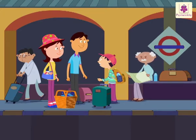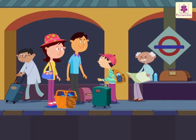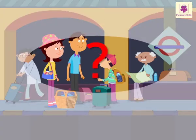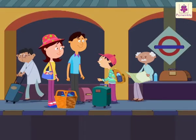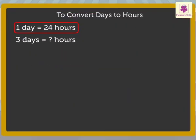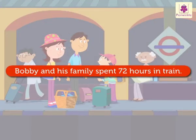It takes three days to reach that destination by train. Let's find out how many hours they spent in the train. To find the hours spent in train, we need to multiply 24 by 3, which is equal to 72 hours. Thus, Bobby and his family spent 72 hours in the train to reach their final destination.